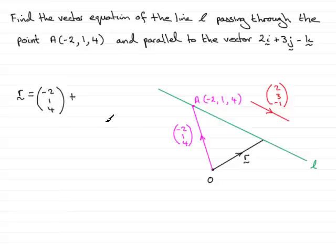Followed by any amount in the direction of this vector. And that's written as plus lambda in the direction of the vector (2, 3, -1). And that gives me the vector equation of the line.